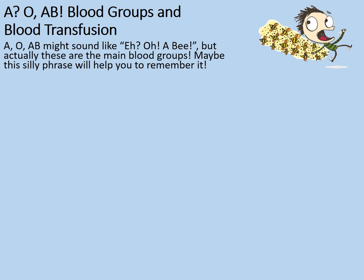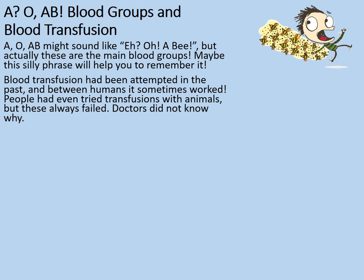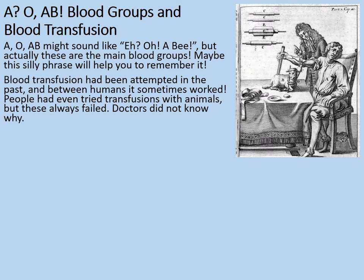A, O, A, B — these are the main blood groups. Blood transfusion had been attempted in the past and worked between humans — well, sometimes anyway. People had even tried transfusions with animals, but these had always failed. Doctors did not know why blood transfusions sometimes worked between humans, sometimes didn't, but always failed between animals. They didn't realise there was a difference between blood in people, blood in animals, and actually different blood between different people.